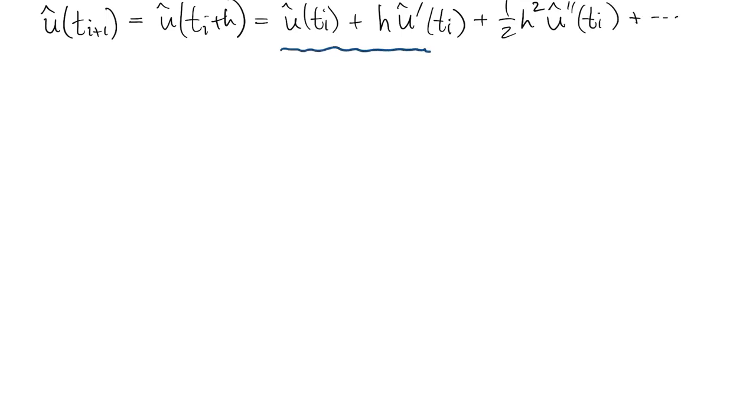Let's write out a Taylor expansion for the solution u-hat of an ODE. The first two terms here are the ones that are picked up by Euler's method. That's first order accurate.